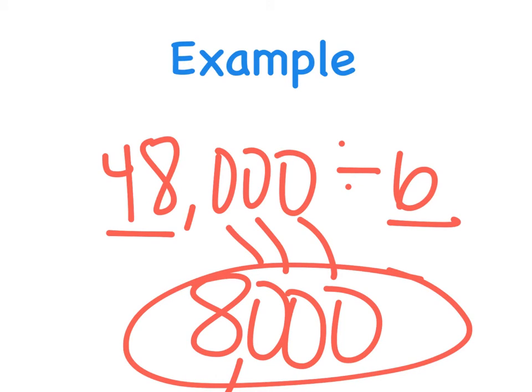Again, you can also think about those zeros as a label. 48,000 divided by 6, think about thousand as my label, would be 8,000.